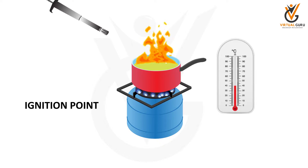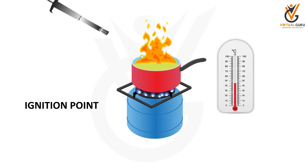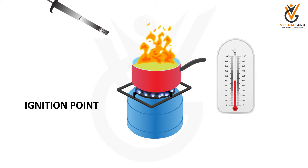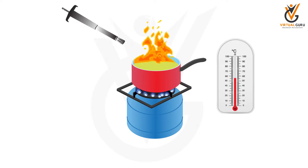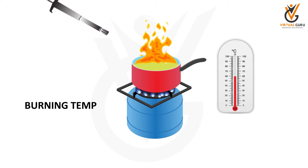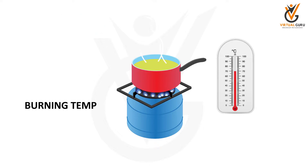The next property is ignition point. It is the lowest temperature to which a combustible substance should be heated to catch fire with air. The third property is called burning temperature. The burning temperature and ignition temperature are both the same — it is the minimum temperature required for a substance to catch fire.